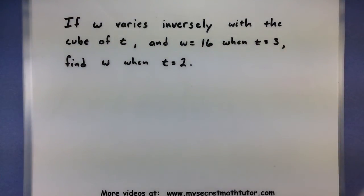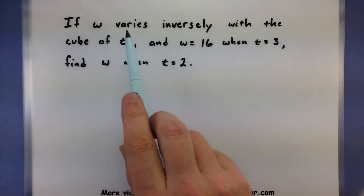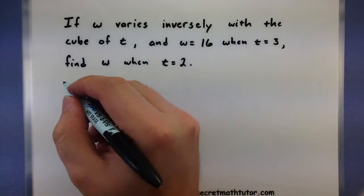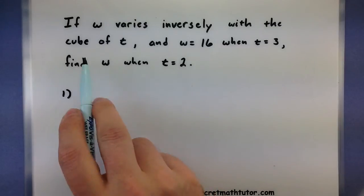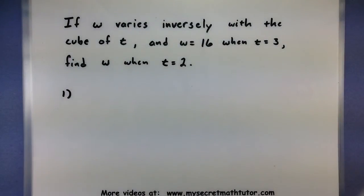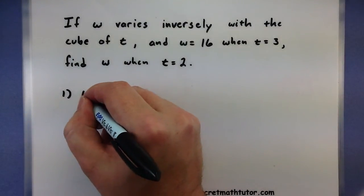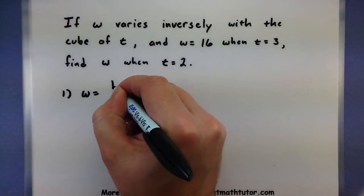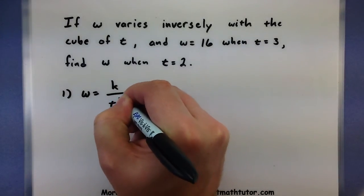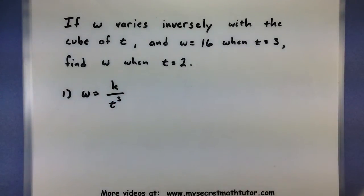In this next problem we have if w varies inversely with the cube of t and w equals 16 when t equals 3, find w when t equals 2. This is another one where it kind of gives away the variation. It says w varies inversely with the cube of t. There is a slight change here though. It's the cube of t instead of just t. So we'll write this as w varies inversely with the cube of t, so t is going to be cubed.